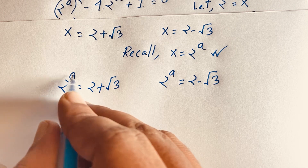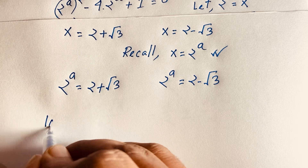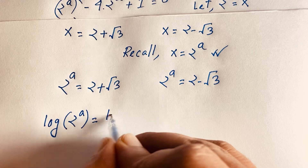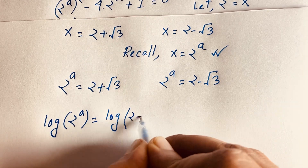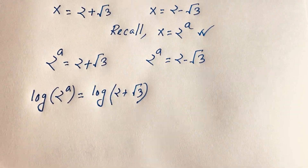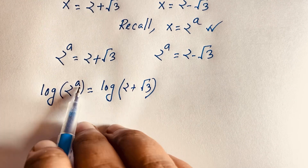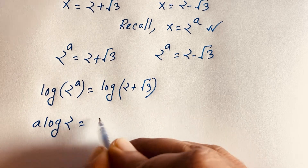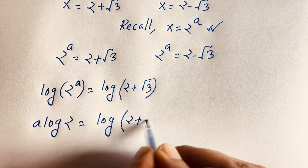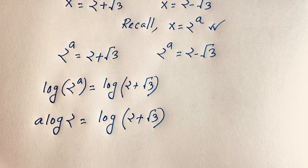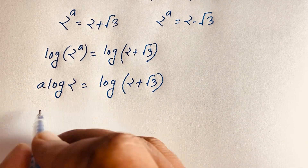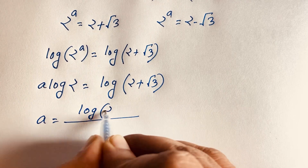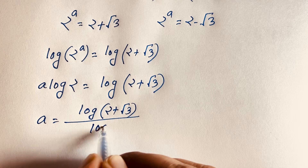To find the value of a, I take the logarithm of both sides. For the first case: log(2^a) = log(2 + √3). The exponent comes down, giving a·log 2 = log(2 + √3). Dividing both sides by log 2, we get a = log(2 + √3) / log 2.